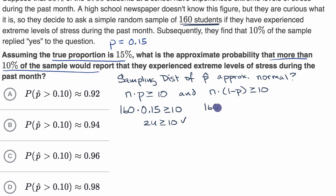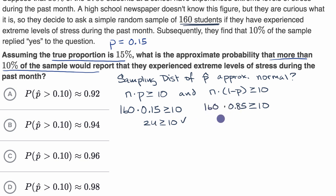And if we take our sample size times one minus p — one minus 0.15 is 0.85 — that gives us 160 times 0.85, which is 136. That is way larger than 10, so that checks out as well. So the sampling distribution of our sample proportions is approximately normal.